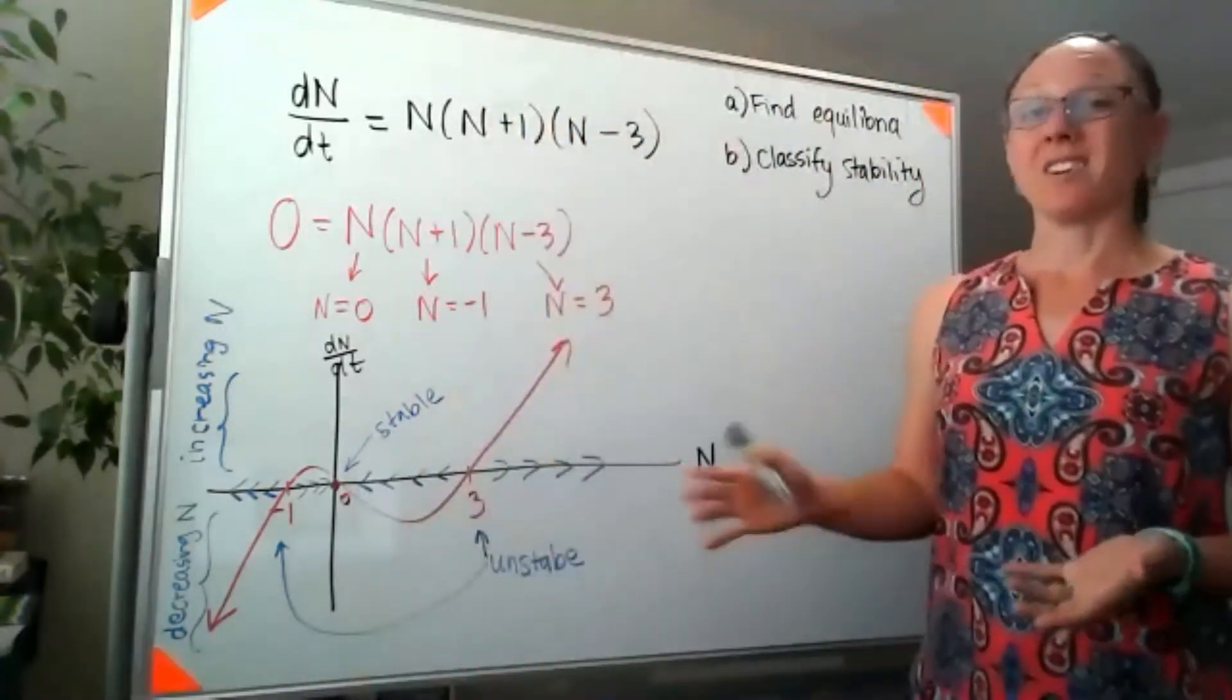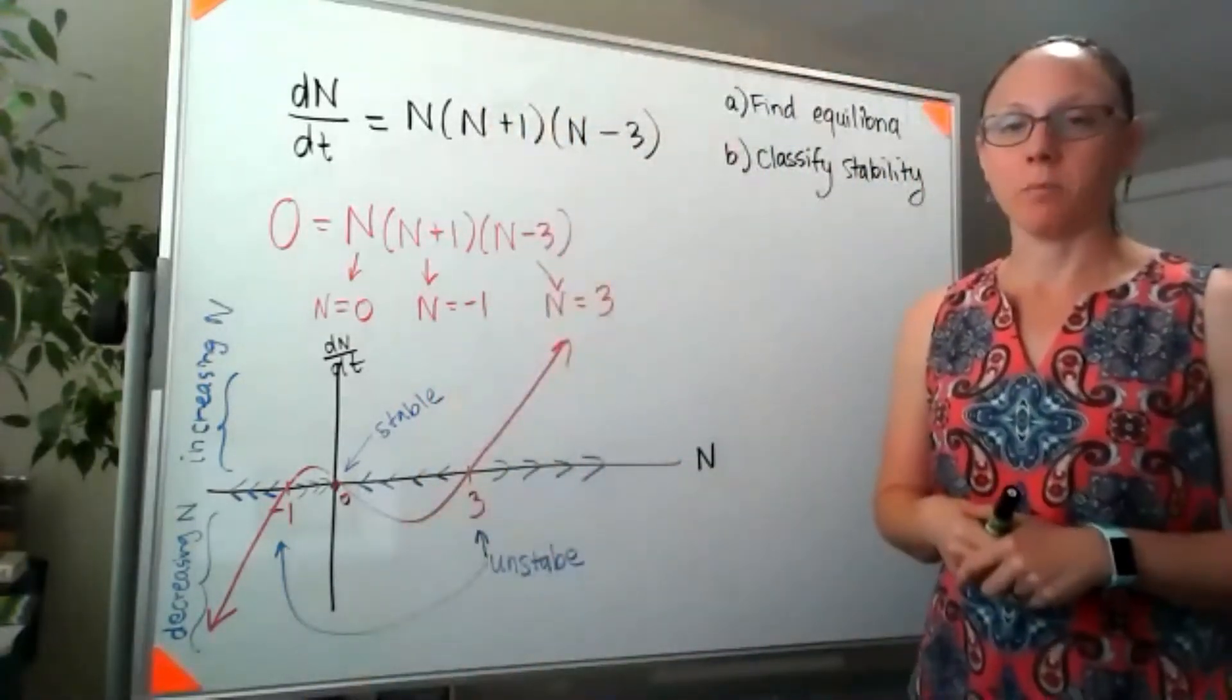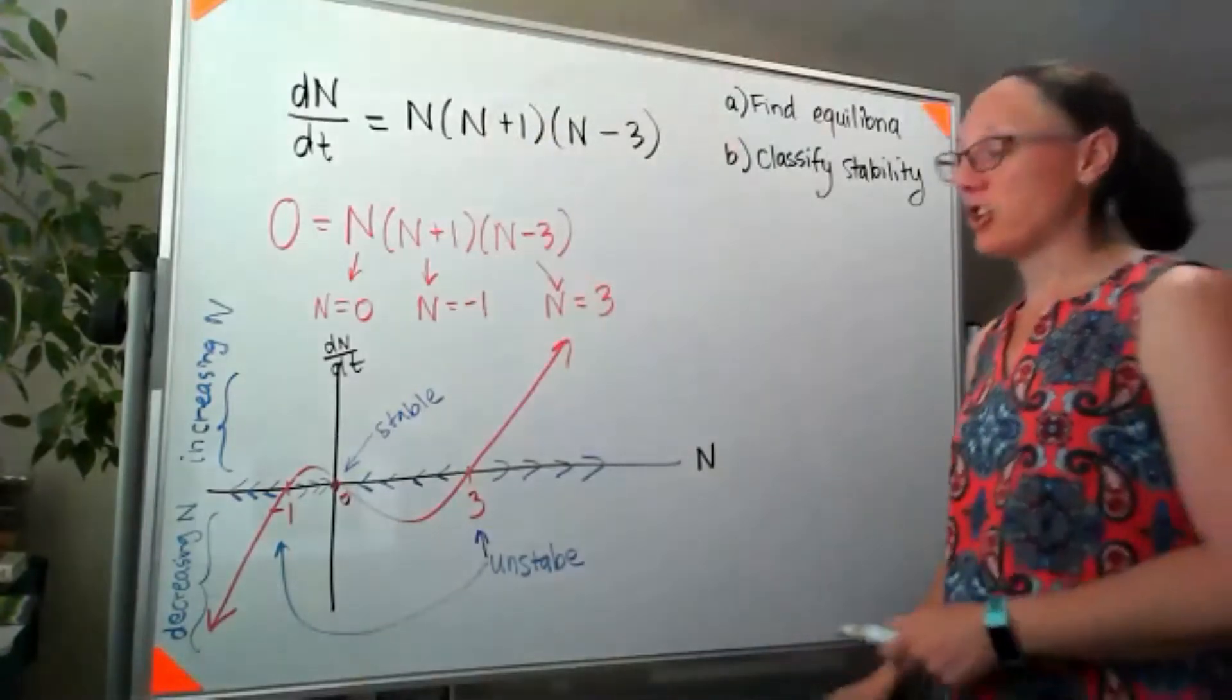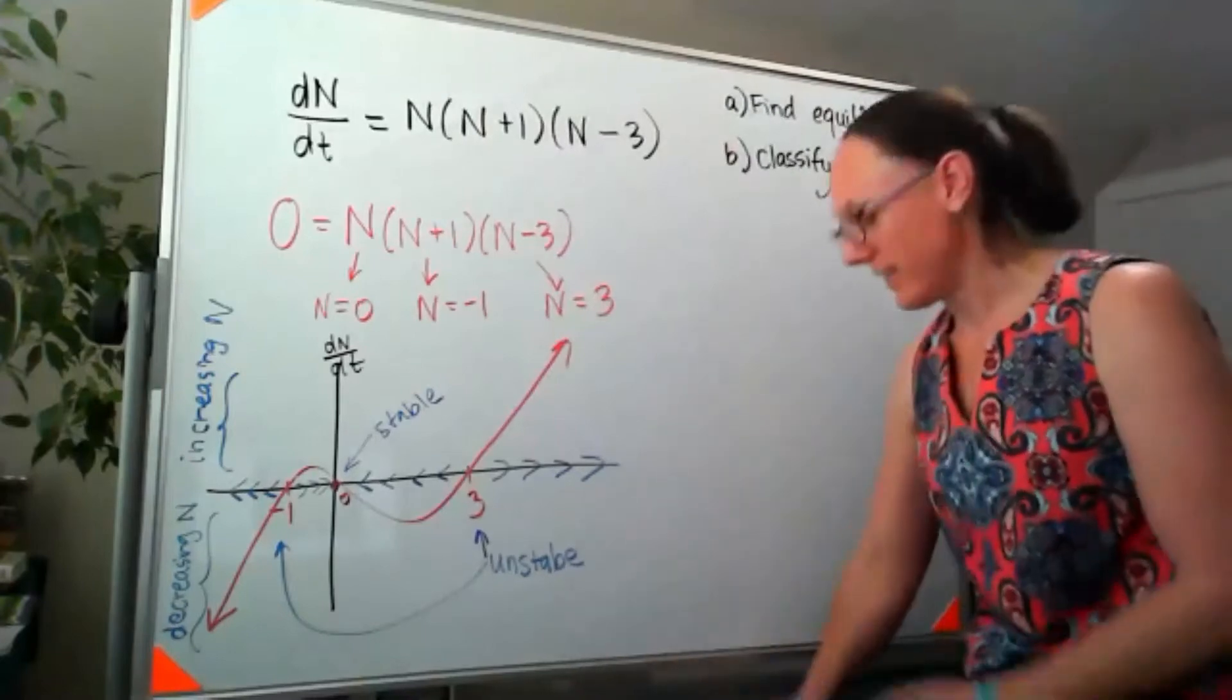Moving to our second option for classifying stability, that local stability criterion. It's actually very closely related to what we just did.